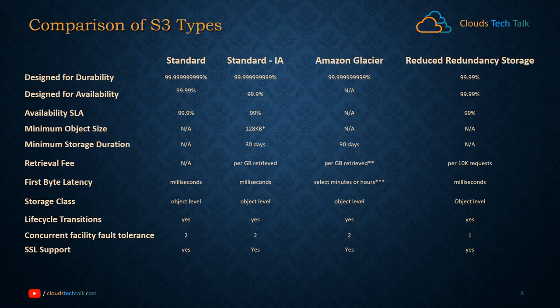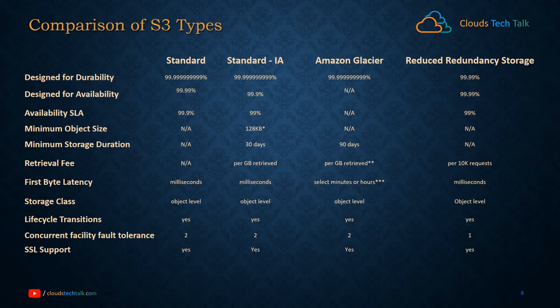Glacier usually takes 3 to 5 hours to retrieve archived files. But in case of emergency, retrieval can be done within 5 minutes, though at a higher cost. For the storage class dimension, each one is object-based level storage, and all storage types support lifecycle transitions. If you configure a lifecycle transition policy, files will automatically transfer between storage types. Apart from Reduced Redundancy Storage, there will be a minimum of two concurrent facilities for Standard, Standard IA, and Glacier, reducing the chance of data loss. All storage types also support SSL encryption.